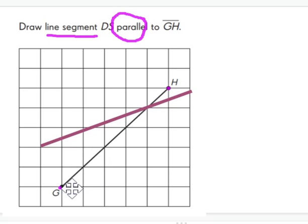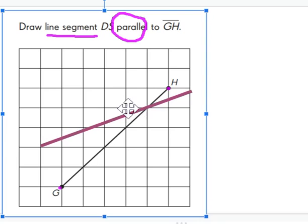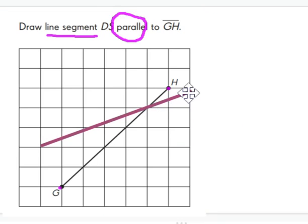It is not parallel to GH because it crosses right into it, and we know that parallel means they stay the same distance apart and never touch. So I'm going to go ahead and get rid of that and try to fix it so that it is a parallel line segment.